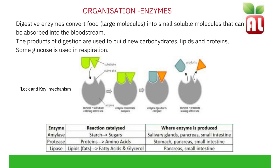Digestive enzymes convert food — large molecules — into smaller, more soluble molecules that can be absorbed into the bloodstream. The products of digestion are used to build new carbohydrates, lipids and proteins. And some glucose is used in respiration.